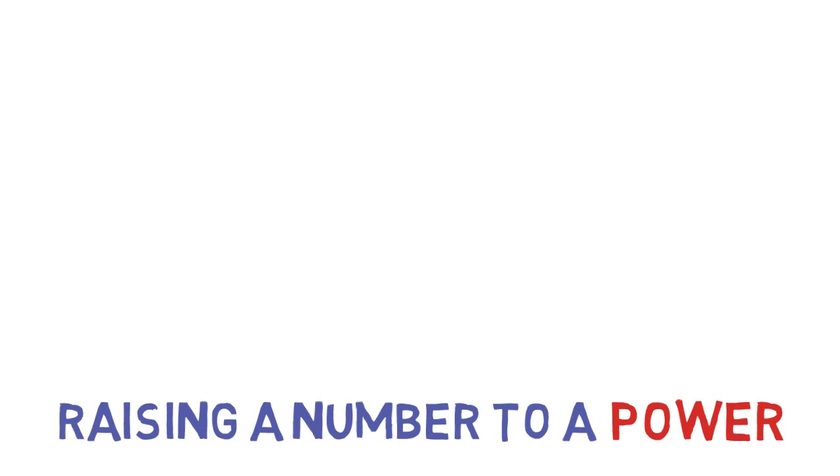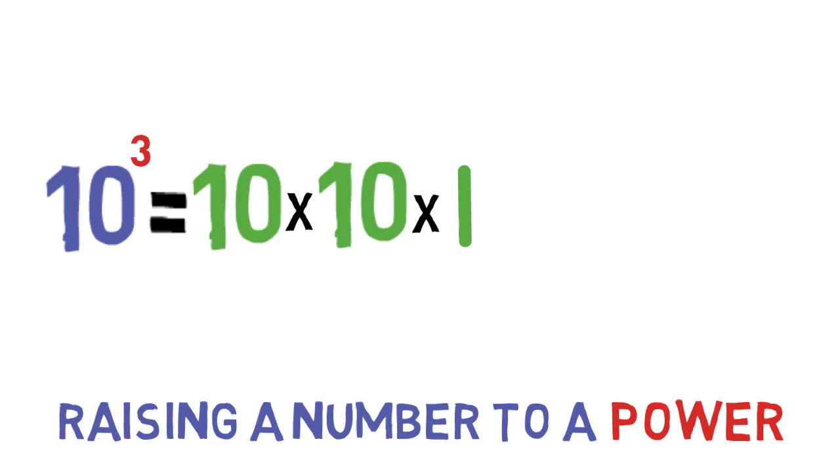As another example, 10 to the 3rd power means 10 times 10 times 10, which equals 1,000.